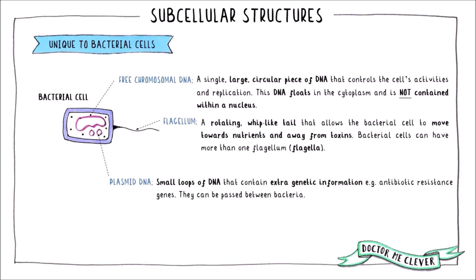Bacterial cells also contain plasmid DNA — small loops of DNA that contain extra genetic information, for example the genes that make a bacterial cell resistant to particular antibiotics. Plasmid DNA can be passed between bacteria.